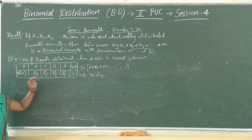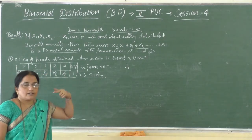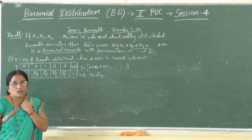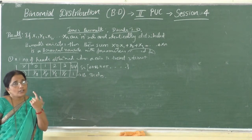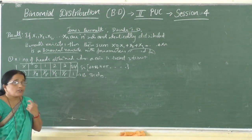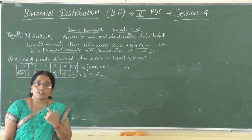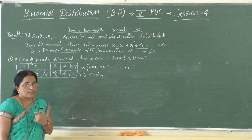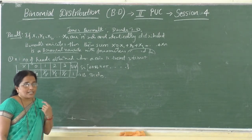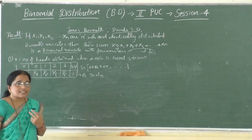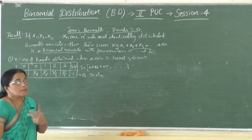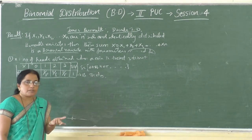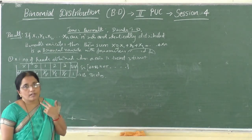Observe the difference between a Bernoulli variate and a binomial variate. For Bernoulli: number of heads when a coin is tossed once — x takes only two values, 0 and 1. If the coin is tossed twice, x takes values 0, 1, 2 — three values — so it is binomial, not Bernoulli. If the experiment is repeated more than once, it becomes a binomial variate.